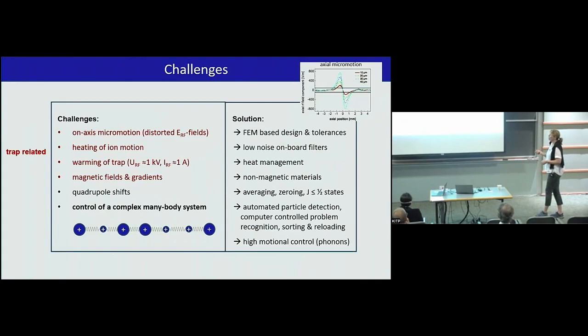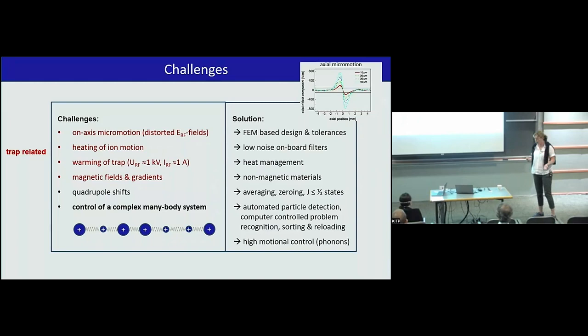The rest that remains now of the challenges here is very technical, actually. When I started, why nobody scaled up the ions so far was actually a lot to do with on-axis micromotion, anomalous heating, the warming of the trap itself that got temperatures of 150 degrees Celsius, inhomogeneities in magnetic fields and all other gradients. It's all trap related.